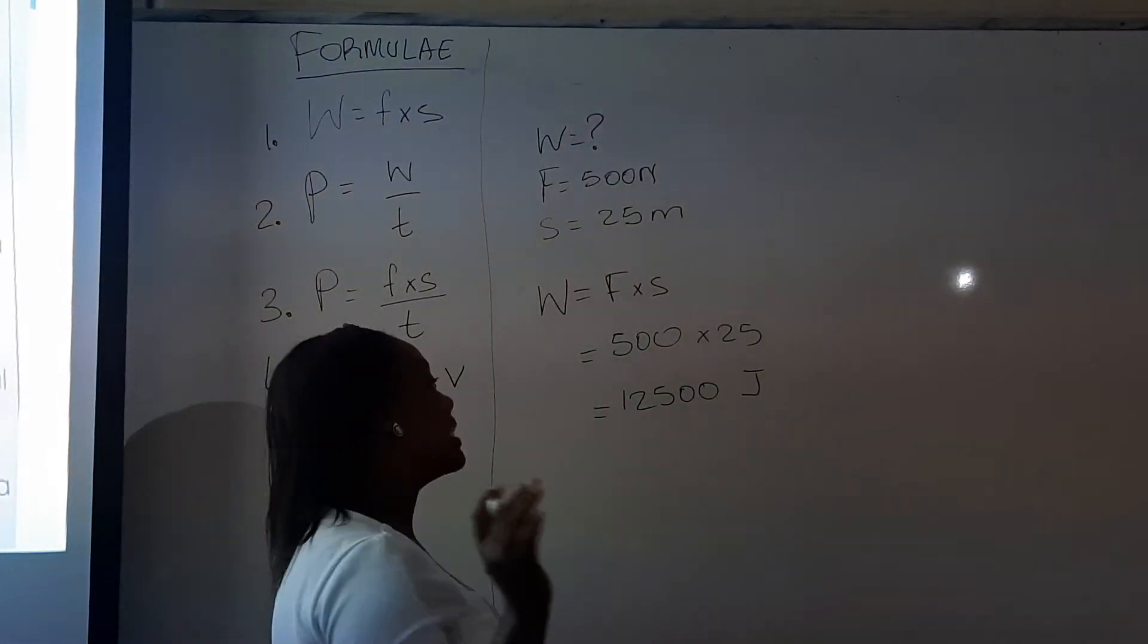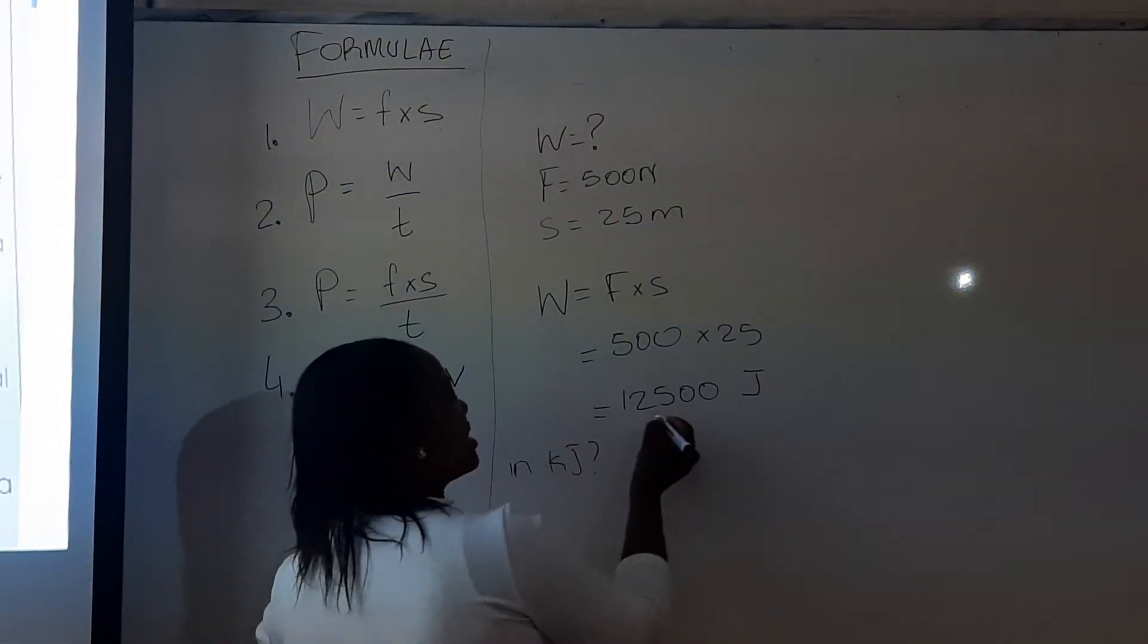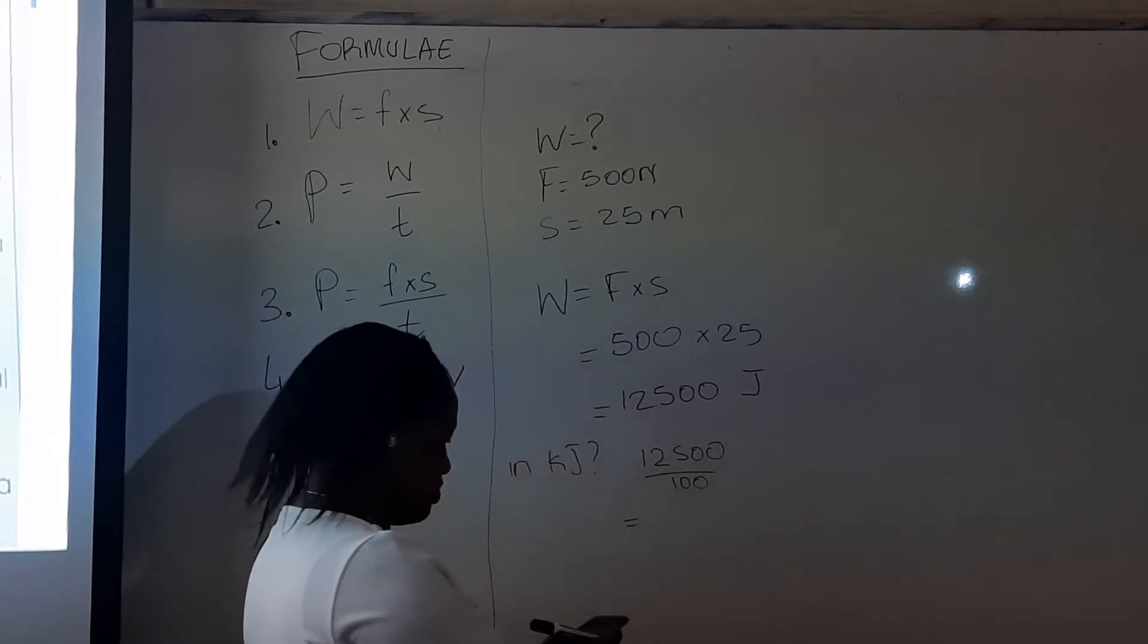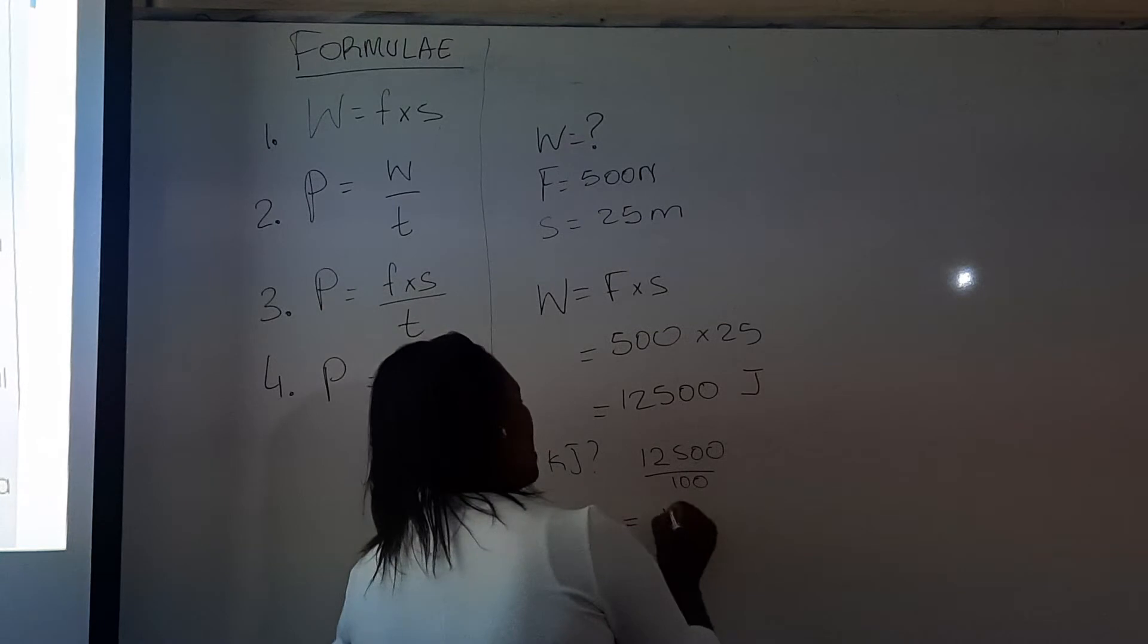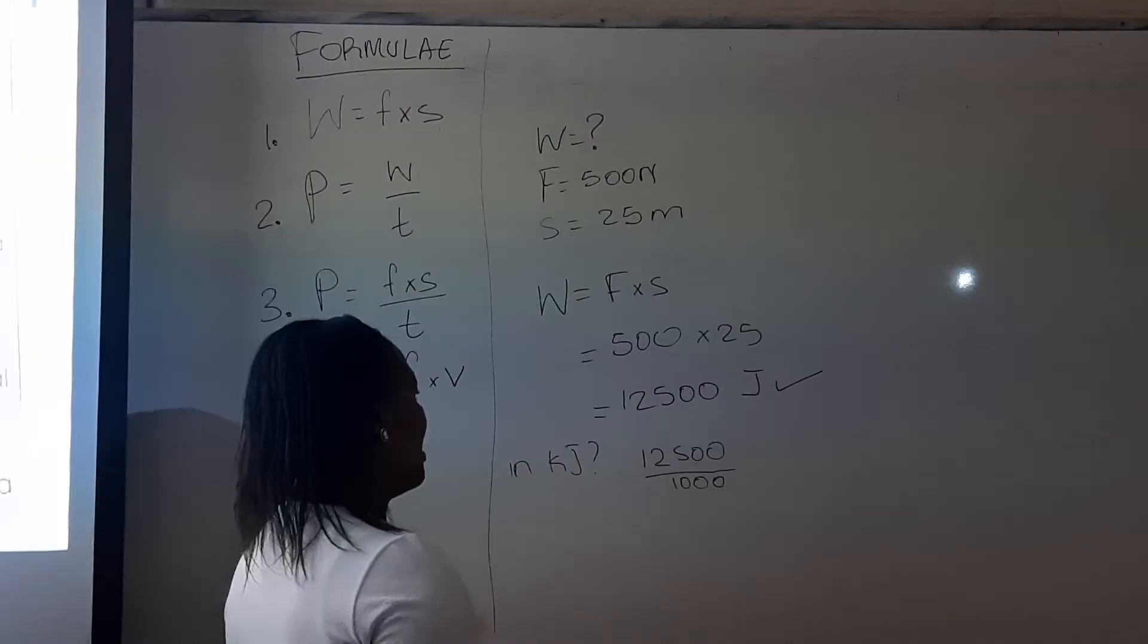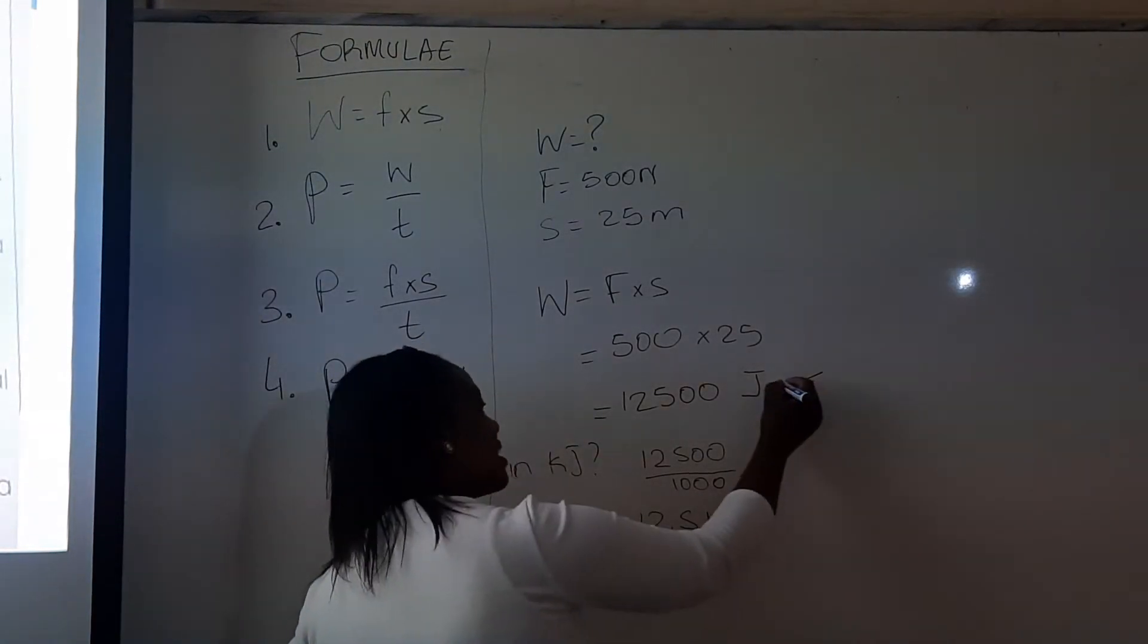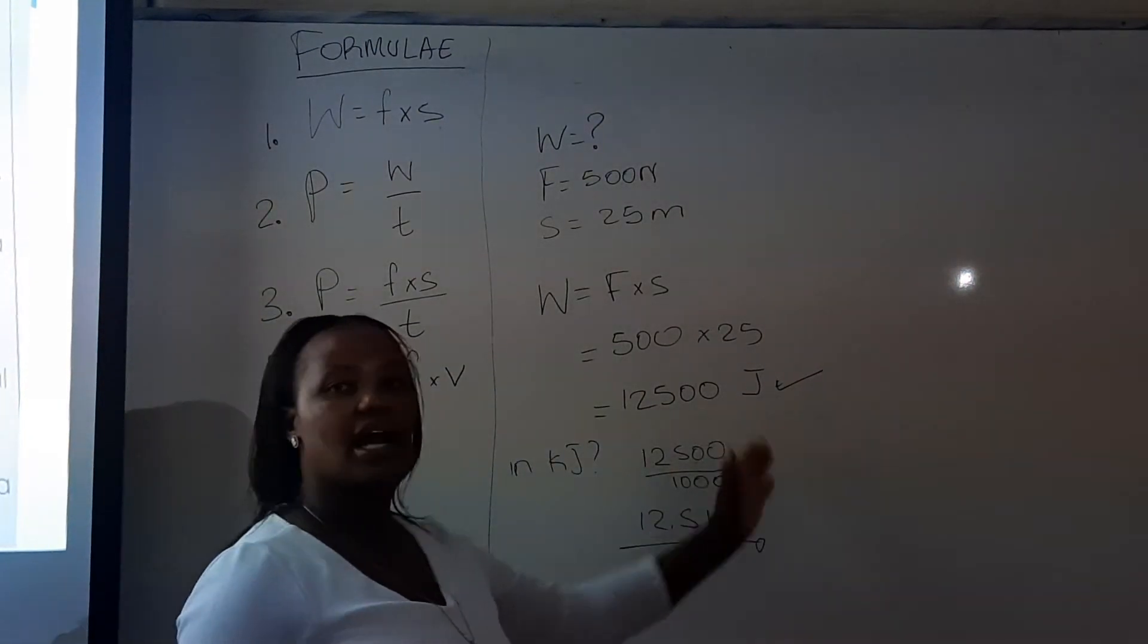So, if they want you to give it in kilojoules, you will divide that by 1000, and it will give you 12.5 kilojoules. But in most cases, this answer will be perfect. You just calculate it and your first answer comes in joules.